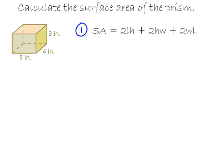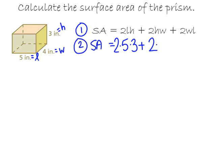Step one is just writing the formula. Step two, we're going to plug in all of the measurements. I would suggest that you label length, width, and height on your figure so when you're substituting measurements, you don't get anything mixed up. Three inches will be the height, the width is four, and the length is five inches. So I have 2(5)(3) + 2(3)(4) + 2(4)(5).